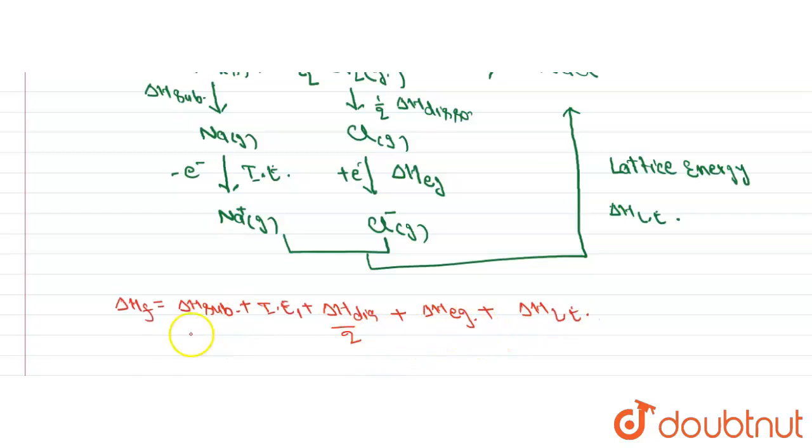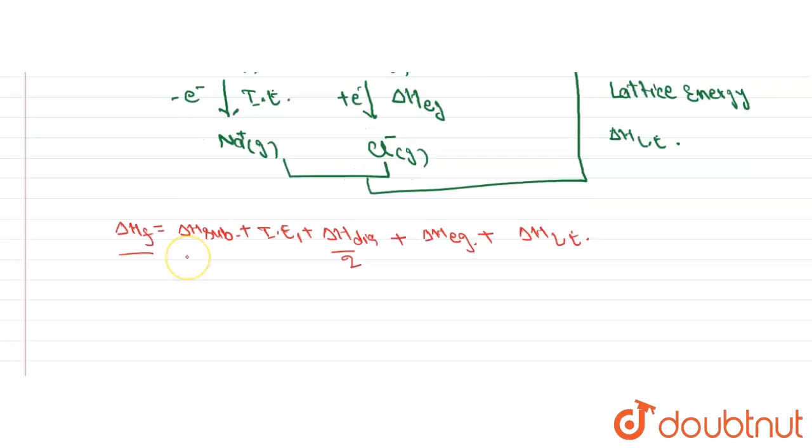So by putting the value of other quantities, we can find out the value of delta H of formation. We can write here: delta H of formation equals 108.5 plus 495.5 plus dissociation energy 243 divided by 2 plus electron gain enthalpy minus 348.8 plus lattice energy minus 758.7.